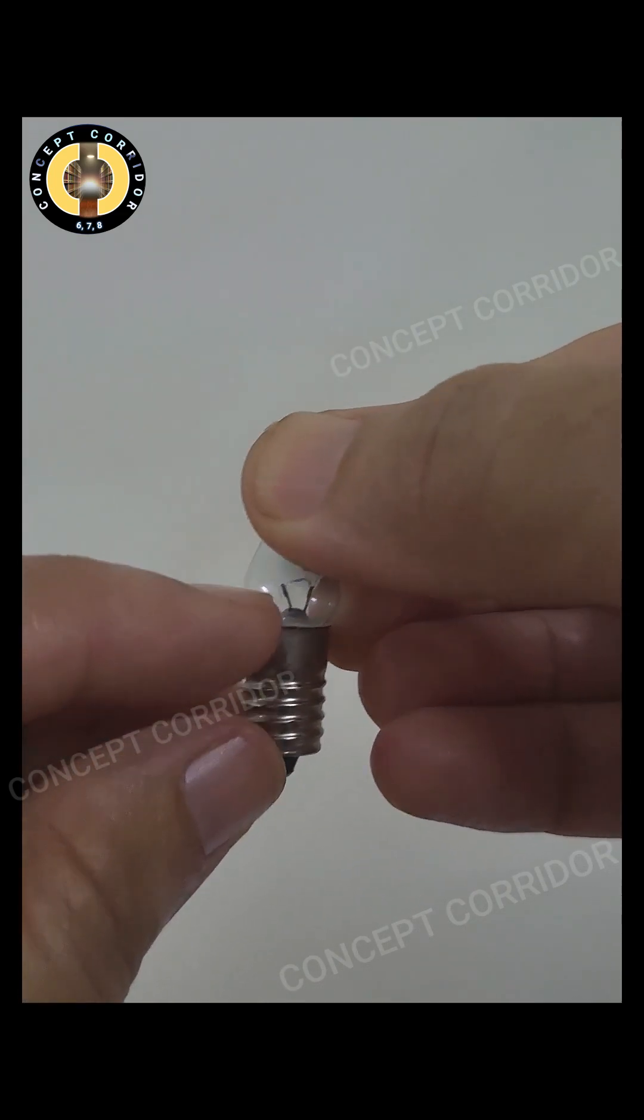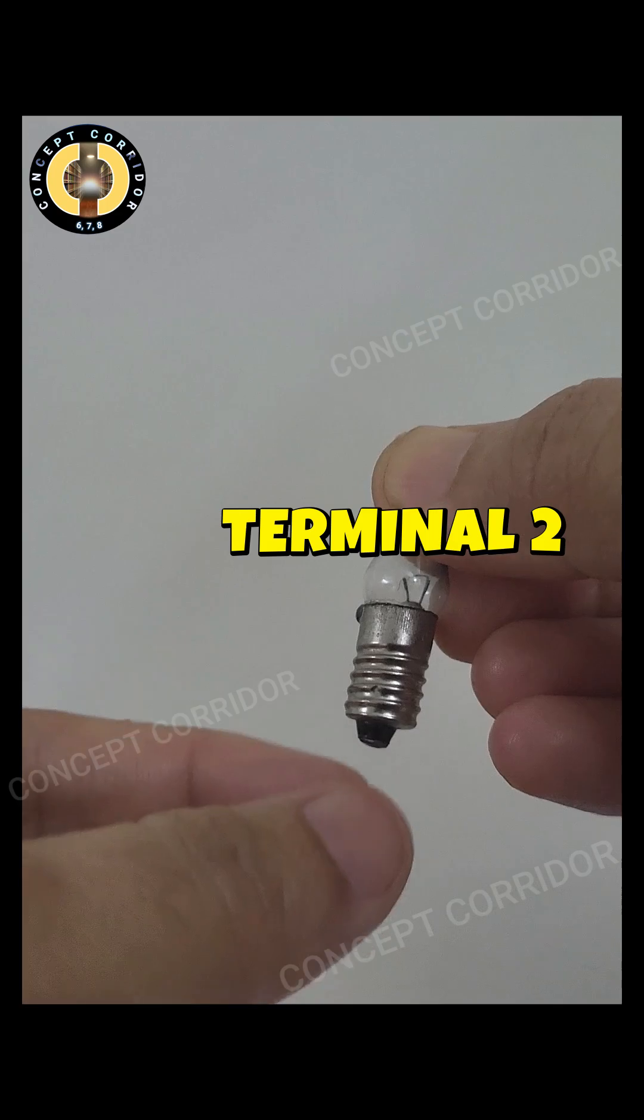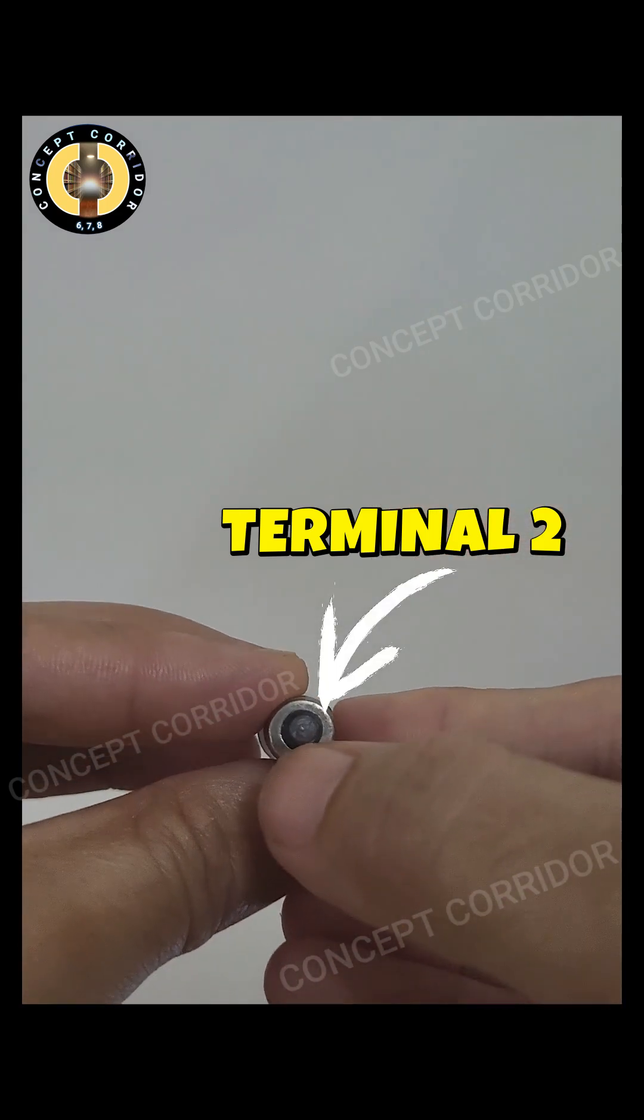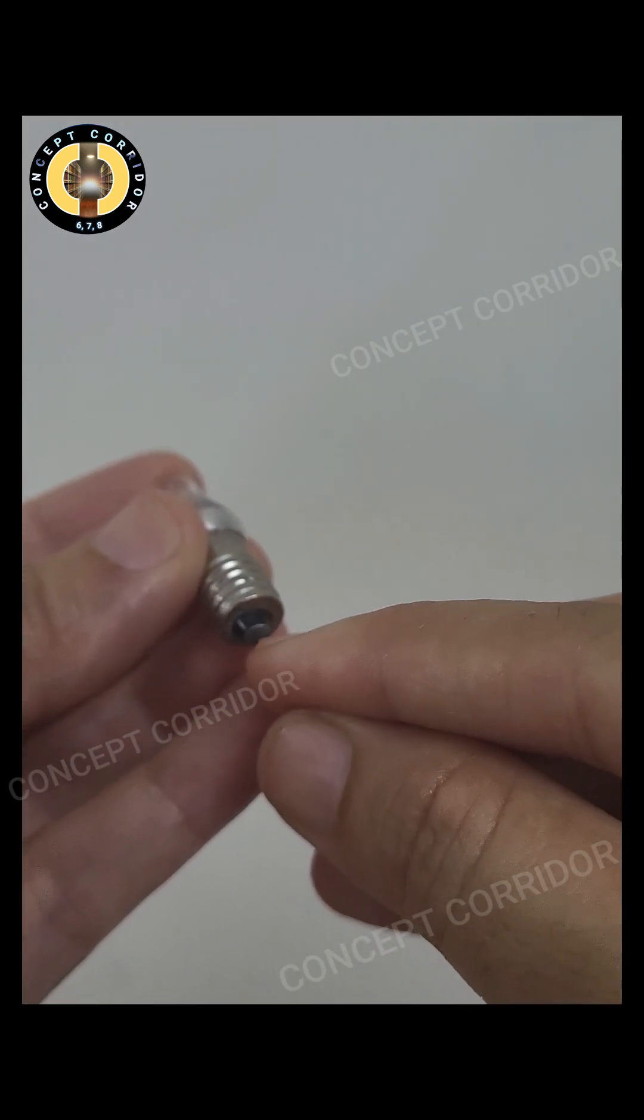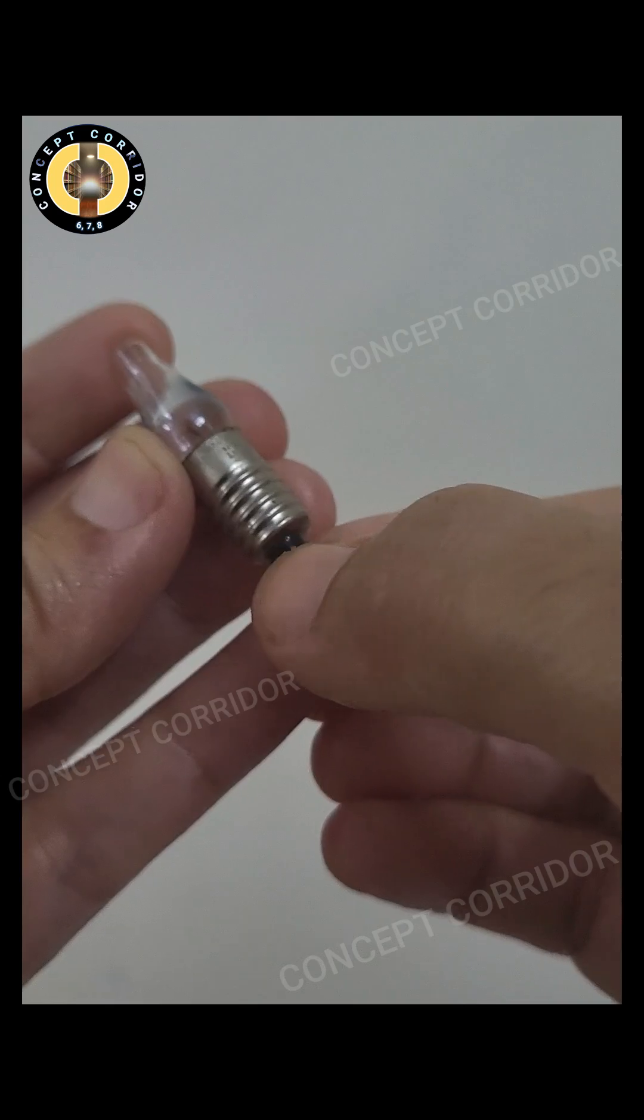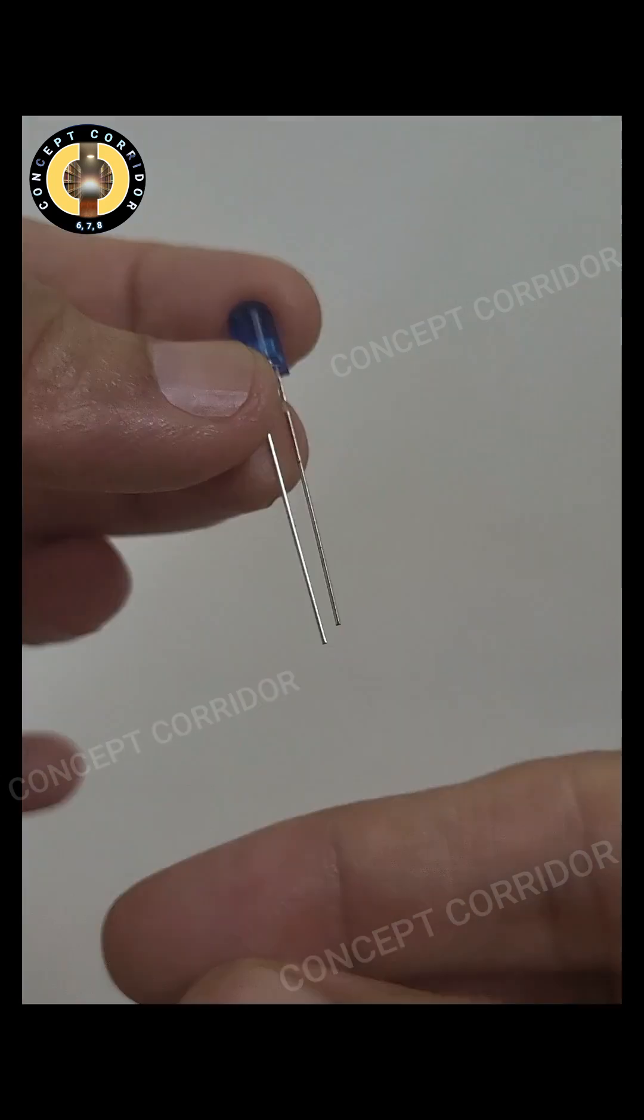The other thick wire is coming from the center of this metal cap and coming here at the base, forming the second terminal. There is a plastic ring in between the metal cap and the second terminal that acts as an insulator.